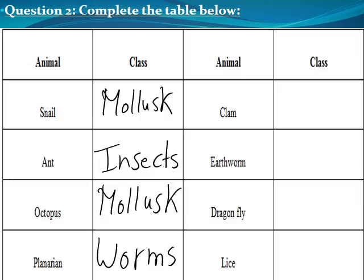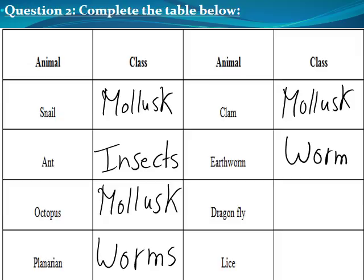Clams belong to the group of mollusks. Earthworm belongs to the group of worms. Moving to dragonfly — dragonflies belong to the group of insects. Flies also belong to the group of insects.